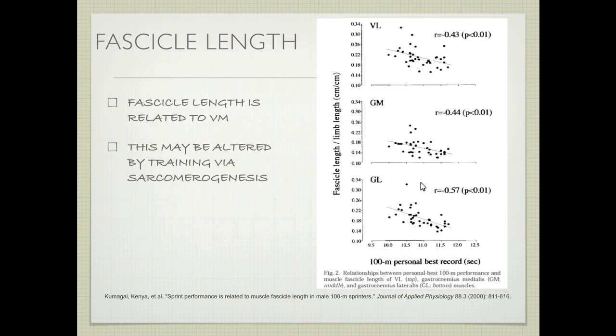Muscle fibers are a chain of sarcomeres, bound up in fascicles. Based on the number of those sarcomeres and the actual length of the fascicle, the longer the fascicle is, the greater the velocity will be — possibly because you have more time or a longer range to accelerate due to that fascicle length. This can be altered by sarcomerogenesis, which typically occurs during eccentric training or using a full range of motion.